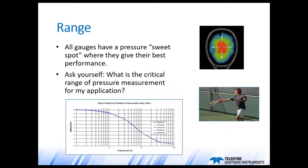Just like a tennis racket has a sweet spot, vacuum gauges have a pressure sweet spot where they will give their best performance. In the graph shown, a thermal conductivity gauge has about a three-order-of-magnitude sweet spot. Different techniques have different pressure regions where they work best. You probably can run a hot filament ionization gauge at pressures above 1×10⁻⁴ Torr, but that's not operating in the sweet spot. Ideally you want to stay well within the operating range. So ask yourself: what is the critical range of pressure measurement for the application?